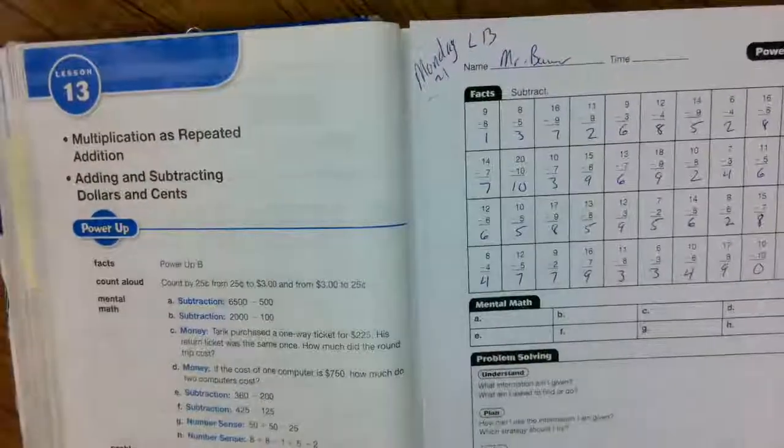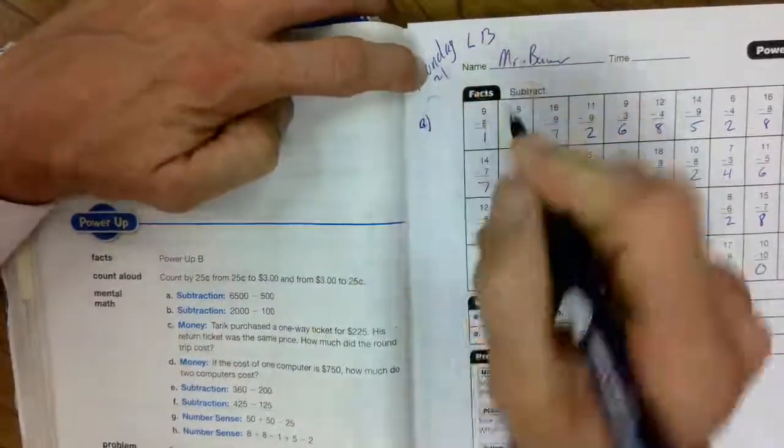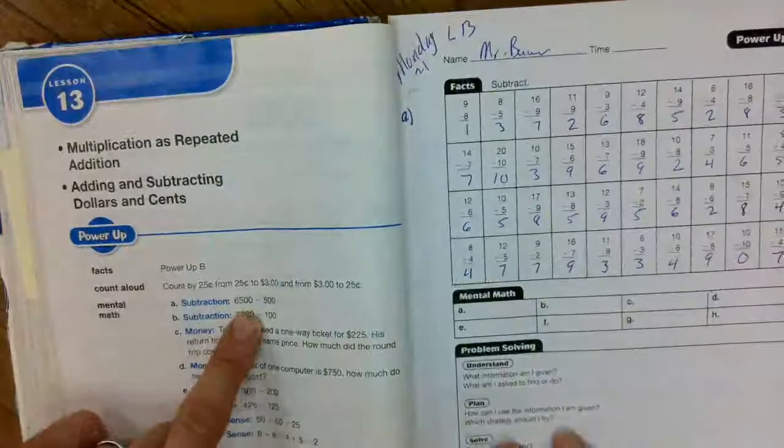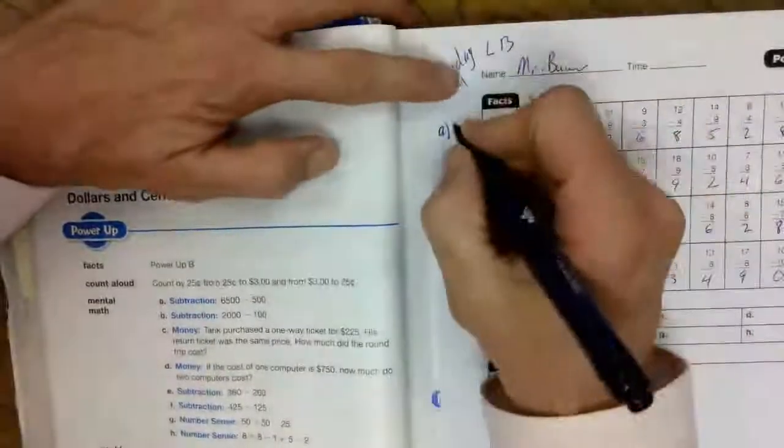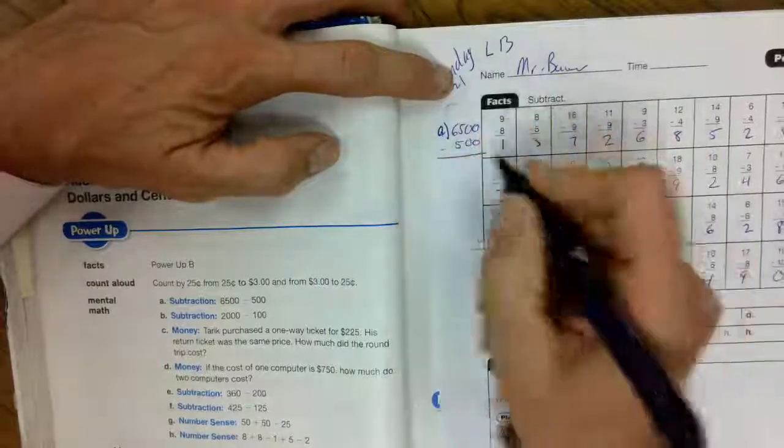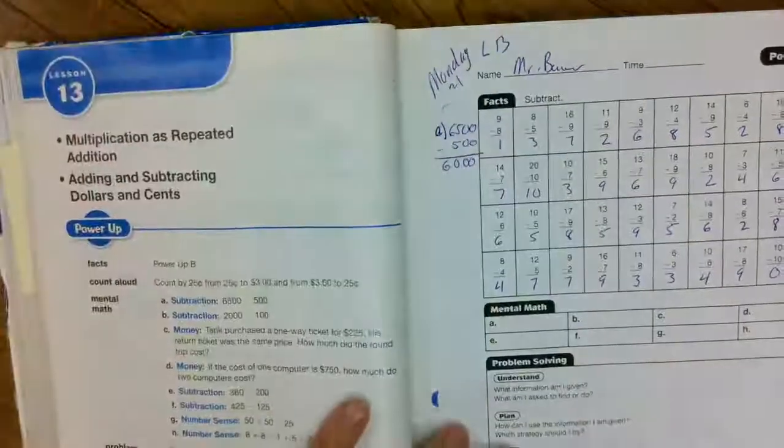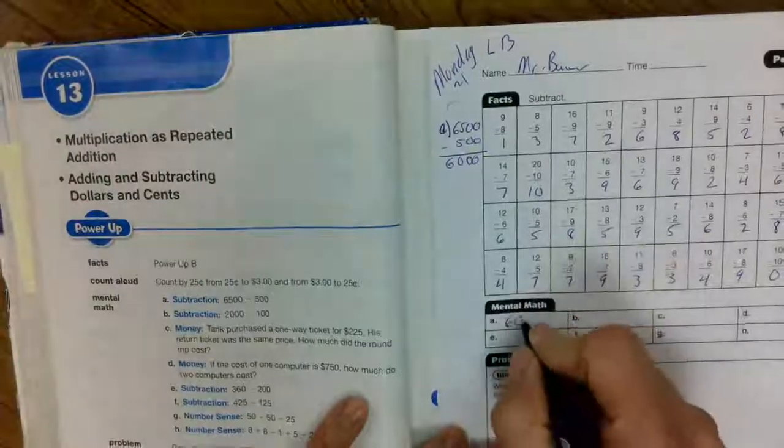All right, let's check out our middle section. Remember, for full credit, you have to show all of your work on the side over here. A says, 6,500 minus 500. 500 minus 500 is 0. Bring down your 6. 6,000.